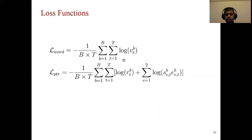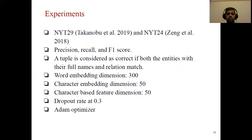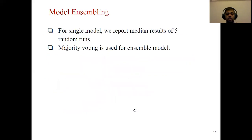For loss functions, we use categorical cross-entropy for every token in word-level decoding, and categorical cross-entropy for the relation and the start and end indices of both entities in pointer network-based decoding. We use the NYT-29 and NYT-24 datasets from Takanobu et al. and Zeng et al. for our experiments. NYT-29 has 29 relations and NYT-24 has 24 relations. We use precision, recall, and F1 score. A tuple is considered correct if both entities are exact matches. We use Word2Vec pretrained embeddings of dimension 300 and the Adam optimizer, with dropout to prevent overfitting.